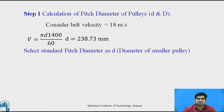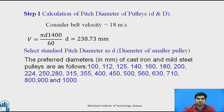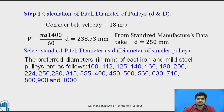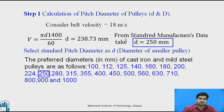Next, we have to select the standard pitch diameter small d of the smaller pulley by referring the standard design data book. These are the standard diameters listed in the table. Since we calculated 238.73 mm, we check the table and select the nearest standard value, which is d = 250 mm.